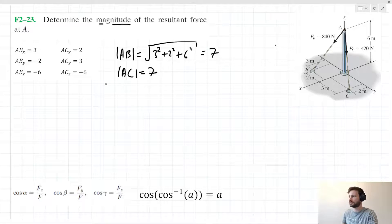Now we can solve for the alpha, beta, and gamma angles for AB and AC. Let's start with AB. We'll call this alpha B, B for force B. The cosine of alpha B equals AB_X over the magnitude of AB. Therefore,